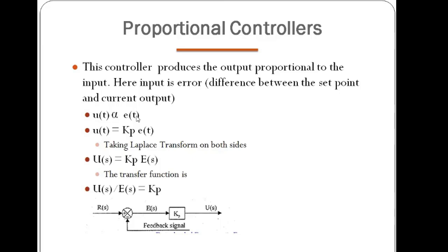To remove the proportionality, we introduce a proportionality constant called Kp. This Kp is called the proportional gain. By introducing this constant Kp, we write the equation as: u(t) = Kp × e(t).